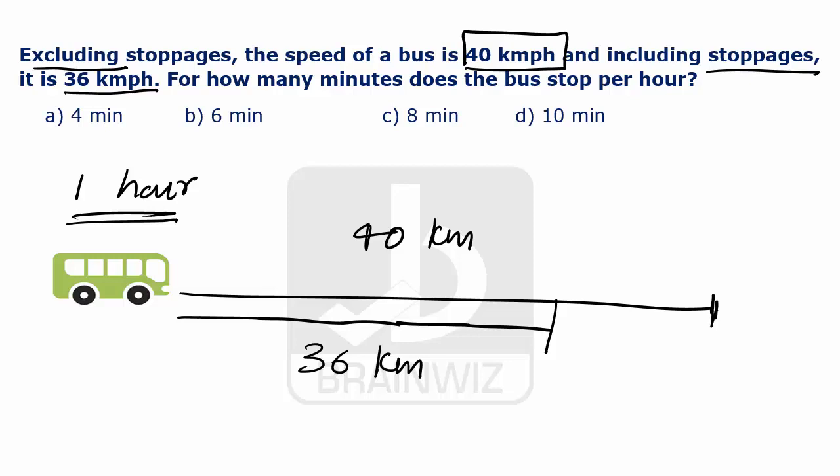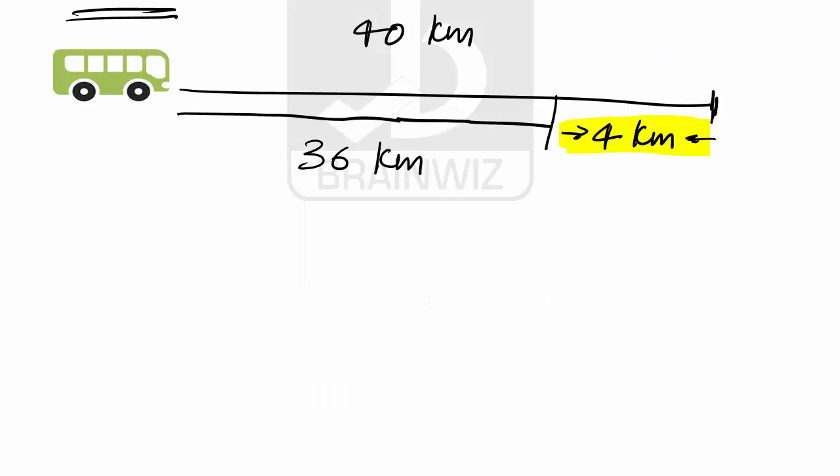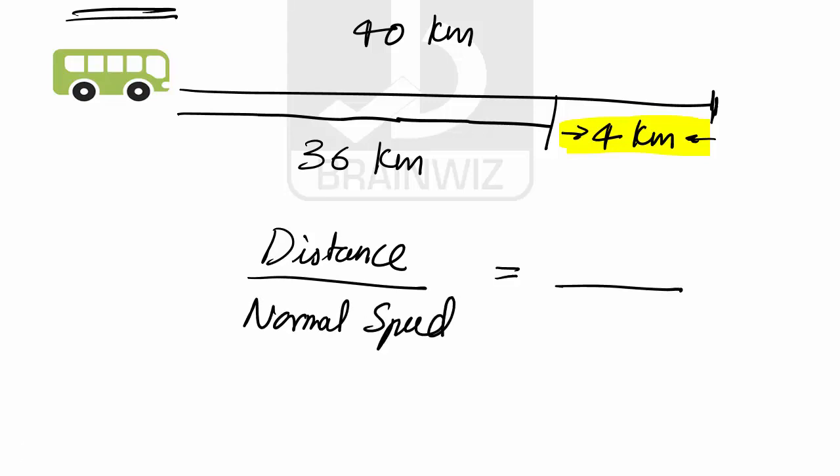So, we are finding that a distance of 4 km has been created. And this 4 km distance is because of stoppages. If the same 4 km, the bus wants to travel at a normal speed, how much is the time it is going to take? Distance because of stoppages divided by normal speed, that is 4 km divided by 40 kmph.